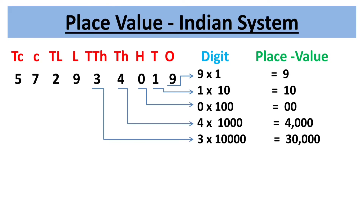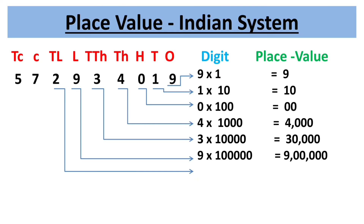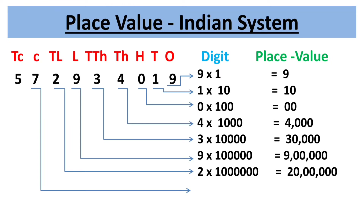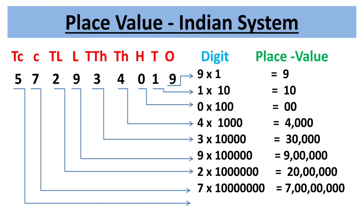The third period is lakhs, consisting of two place values: lakhs and ten-lakhs. Place value of 9 is 9 × 10,00,000 = 90,00,000. Place value of 2 is 2 × 10,00,00,000 = 20,00,000. The fourth period is crores, consisting of two place values: crores and ten-crores. Place value of 7 is 7 × 1 crore = 7 crores. Place value of 5 is 5 × 10 crores = 50 crores.